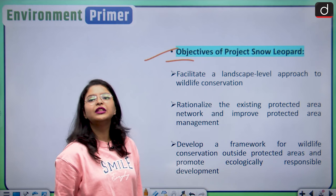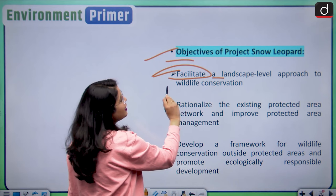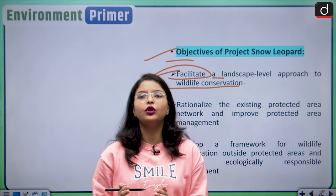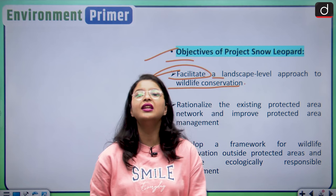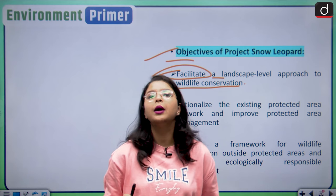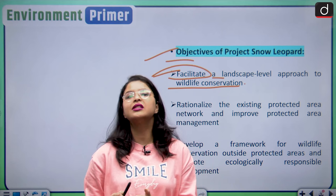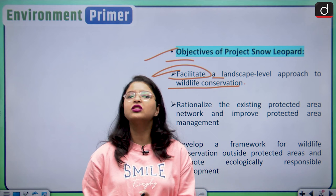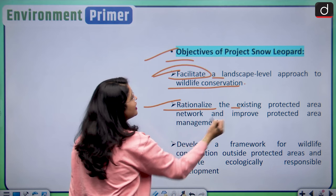Let us analyze the objectives of this ambitious project. The first objective is to facilitate a landscape-level approach to wildlife conservation, because the habitats of snow leopards lie far beyond the protected areas. We need to involve the local community in the protection, as India is known as a land of various cultures and heritage, and we believe in conserving our natural trees, animals, and plants.